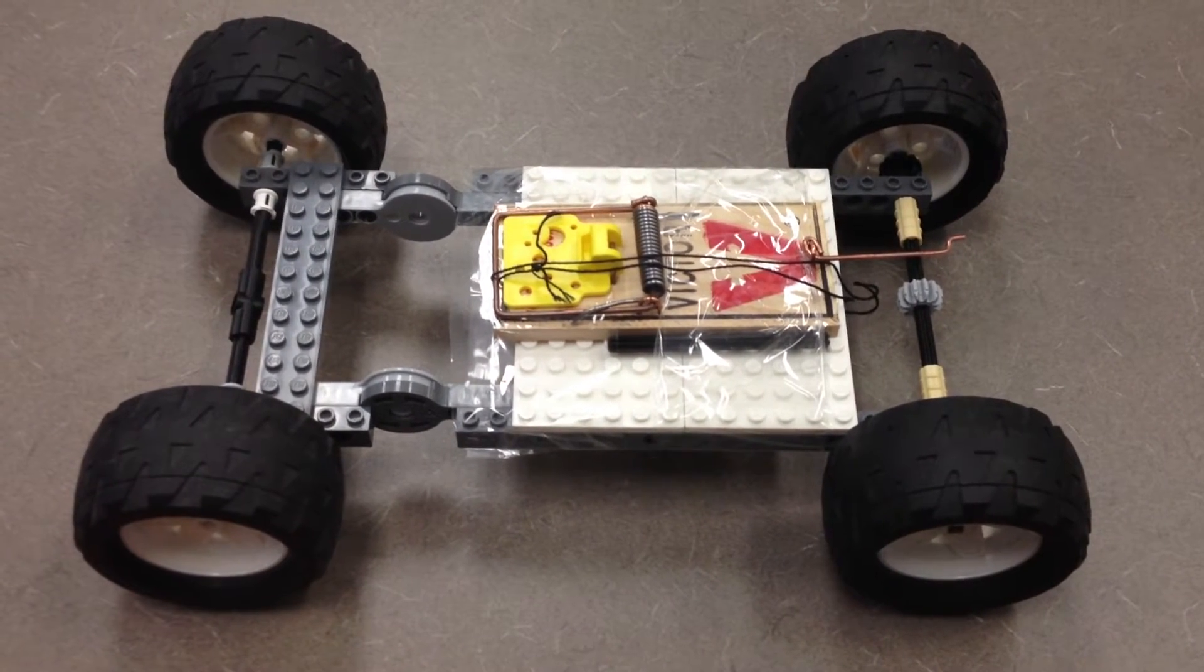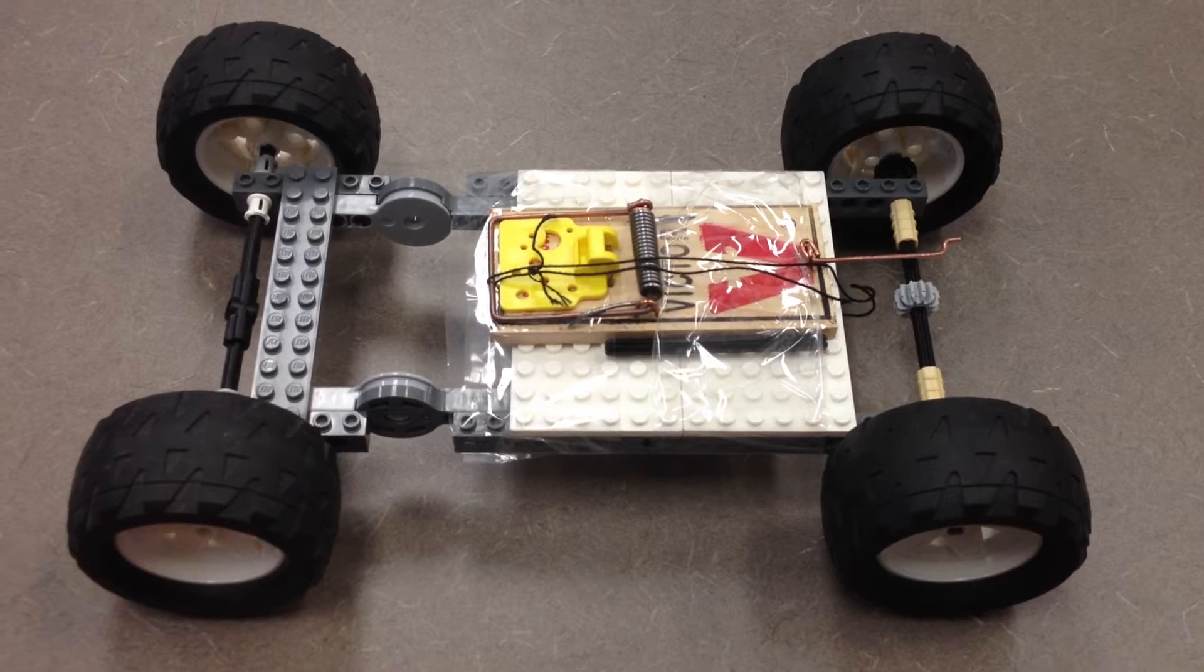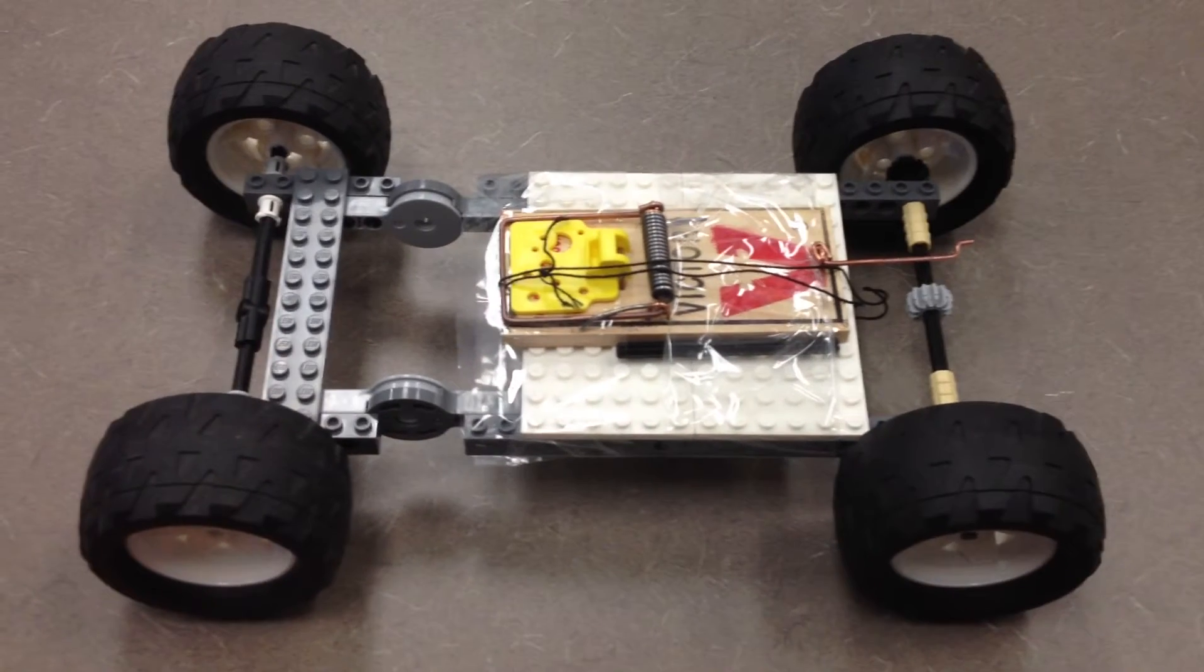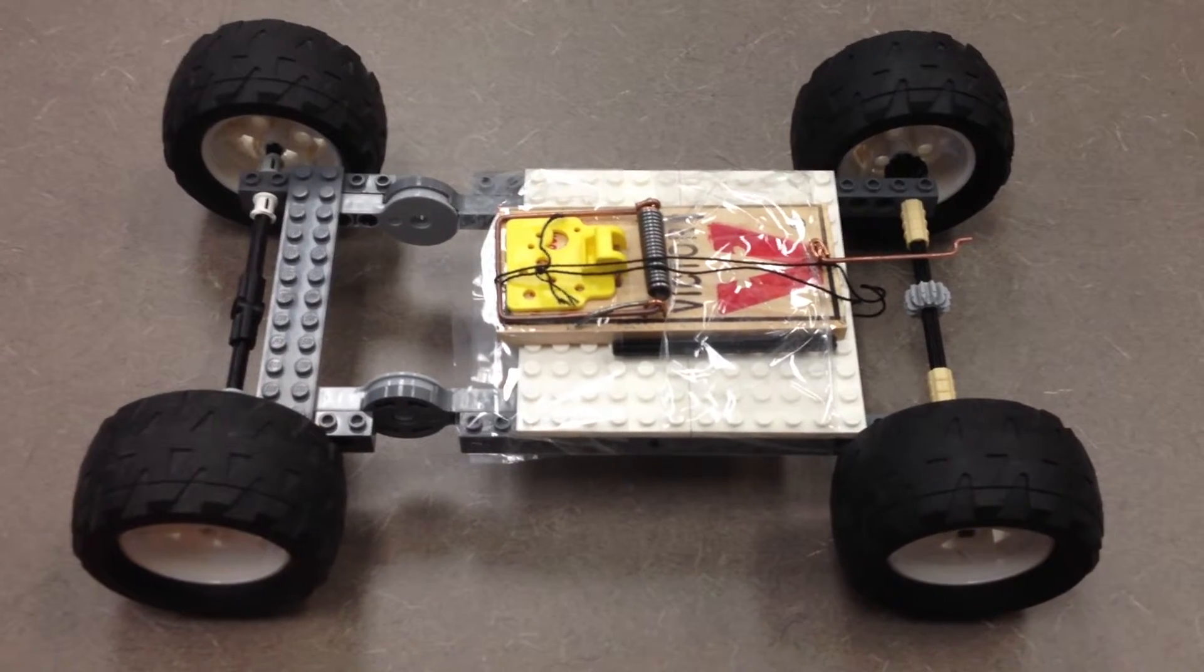For our mousetrap project, we built our car out of LEGOs because they're made of plastic, meaning they're both lighter and stronger than the thin wood we'd be otherwise using. This allows the mousetrap to produce the same amount of force but allows the car to go a greater distance.